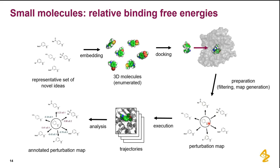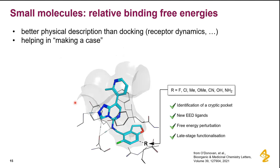For the central compound with experimentally determined binding affinity, you run MD simulations and from the trajectories obtain the annotated perturbation map, which you communicate to chemists. They can see that going from here to there might be preferable. They also look at MD snapshots and see things like a new interaction being picked up or a water molecule playing a role. This is really good for hypothesis building and works better than docking because it accounts for receptor dynamics and other properties.